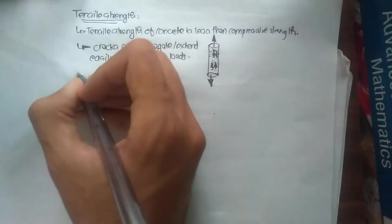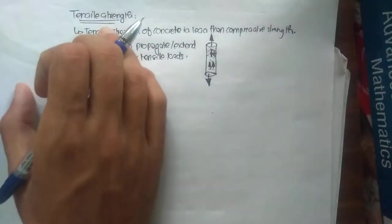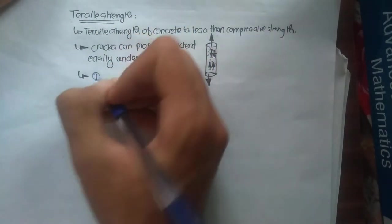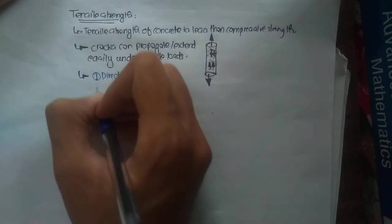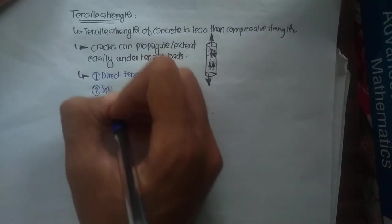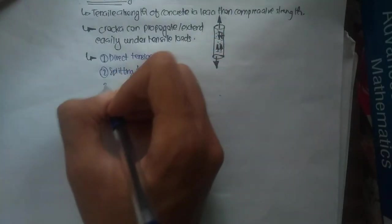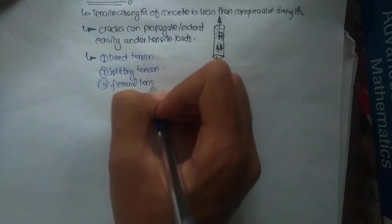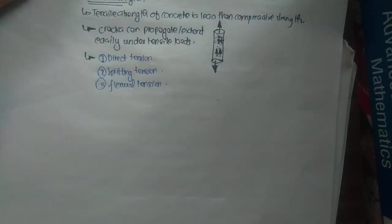The tensile strength of concrete is calculated by three methods: it can be calculated by direct tension, splitting tension, or flexural tension. First, we will talk about direct tension.